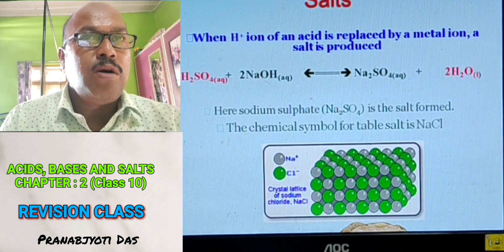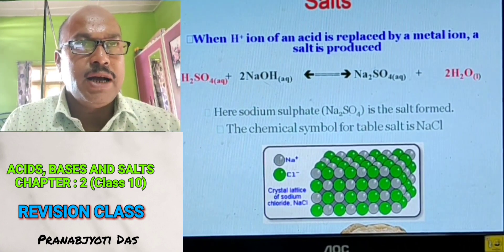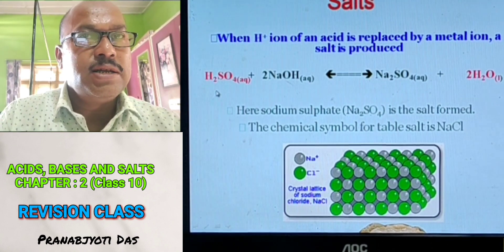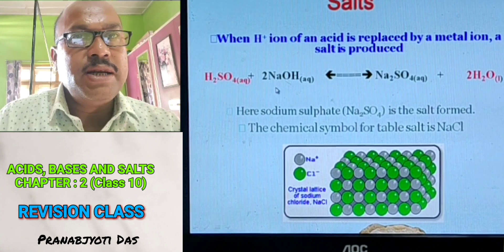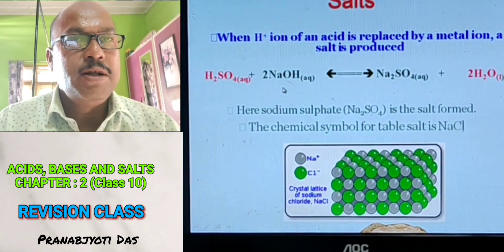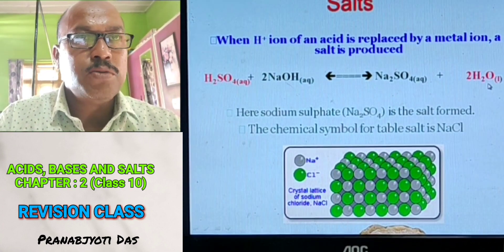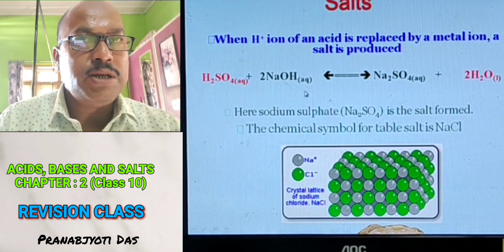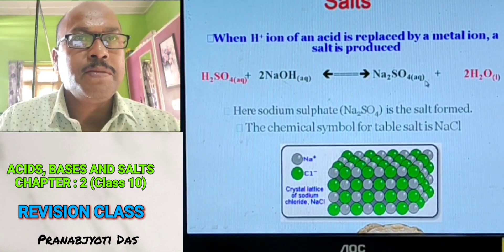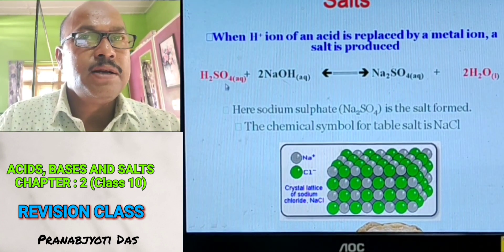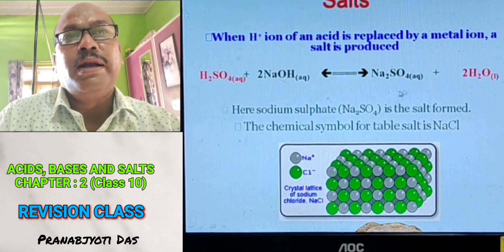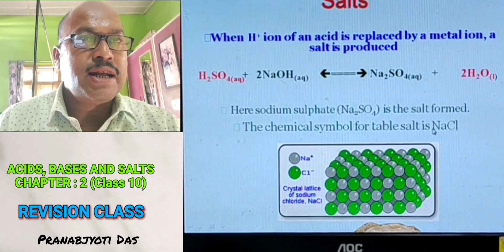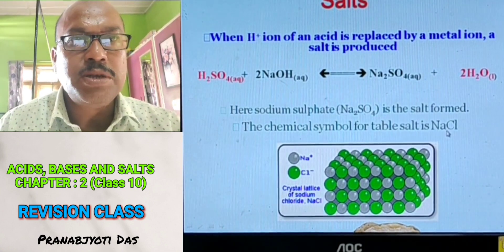Salts: When the hydrogen ion of an acid is replaced by a metal ion, a salt is produced. For example, sulfuric acid (H2SO4) reacting with sodium hydroxide (NaOH) produces sodium sulfate plus water — this is a neutralization reaction. Salt is produced when acid and base neutralize each other. Sodium sulfate is the salt here. Generally salts are crystalline in nature. Another example is common salt, also called table salt, which is NaCl.